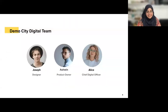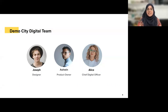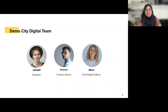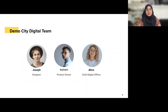Let's meet the Demo City team. The first character is Joseph, the designer, who wants to aggregate all of the city's digital and physical assets into one consistent brand and theme recognizable for the city. He also wants to make sure the digital experience is accessible and easy to use for constituents. The second person is Ashwin, the product owner and liaison to all stakeholders. He's responsible for making sure all new digital services operate correctly and that constituents can complete tasks like paying a parking ticket. Finally, Alice is the chief digital officer and primary stakeholder. She wants to promote these new city services going online and create a case study on the project.